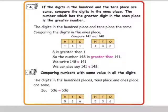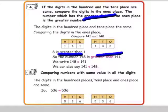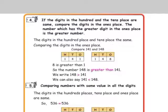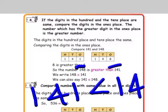Next, if the digits in the hundreds place and the tens place are both the same, we go to the ones place and compare the digits there. For example: 141 and 148. The hundreds place is the same and the tens place is also the same. In the ones place, the digits are 1 and 8. Since 8 is greater than 1, the number 141 is less than 148.